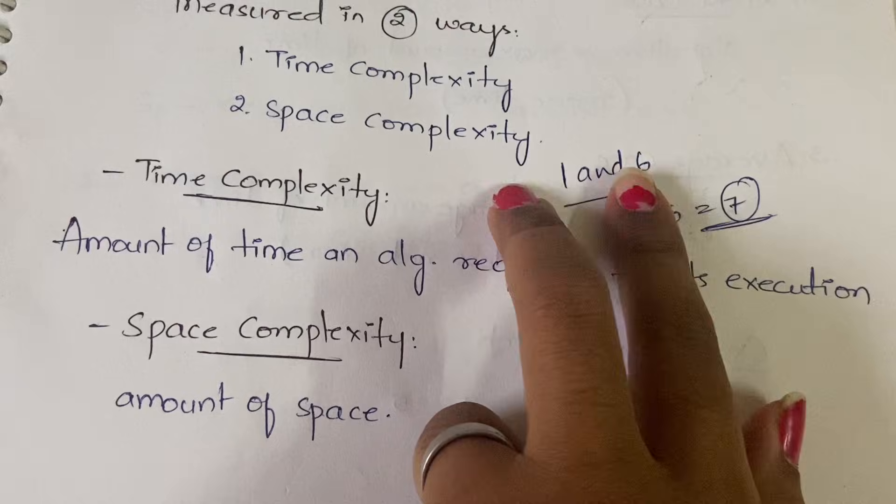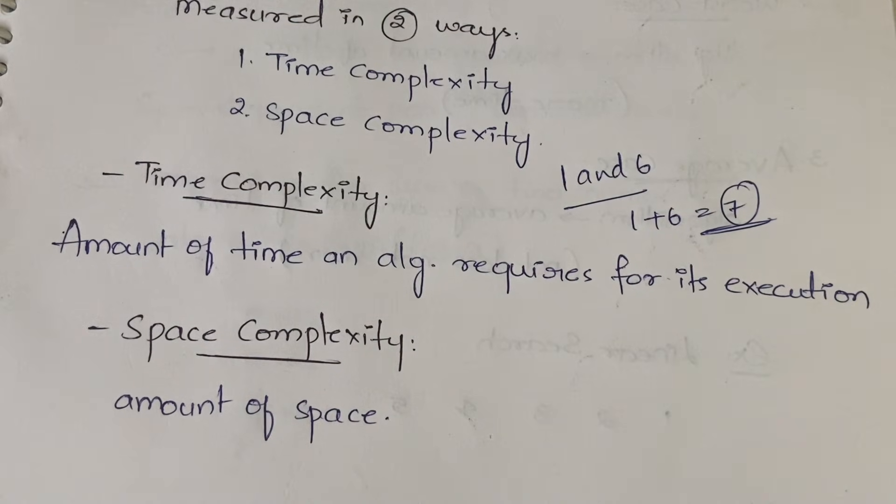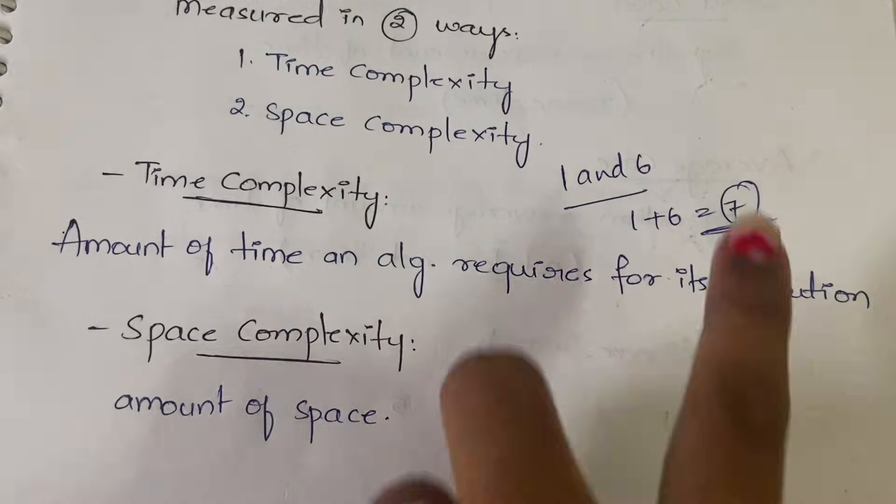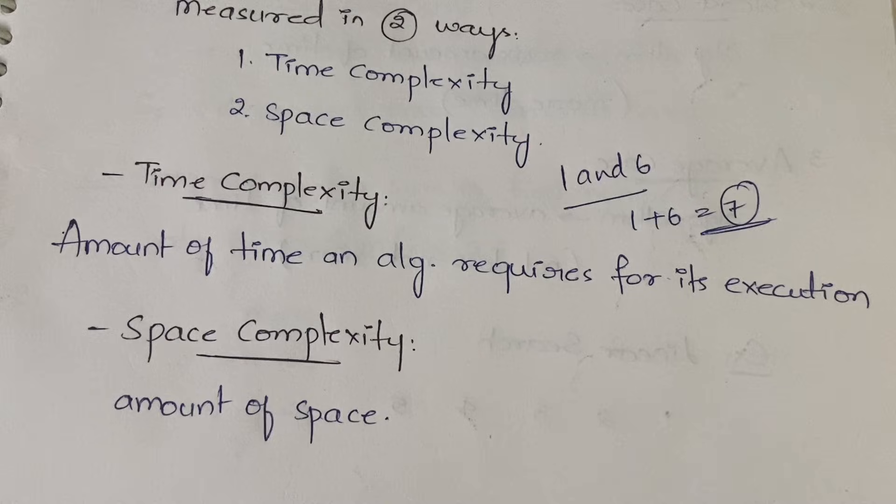How much amount of space that algorithm is consuming is called space complexity. Here you have two variables—two numbers, one and six—and the result seven is the third variable. For these three variables, how much space you need is called space complexity. In time complexity we have some subtypes, and we will discuss how to calculate space complexity in the next coming video.